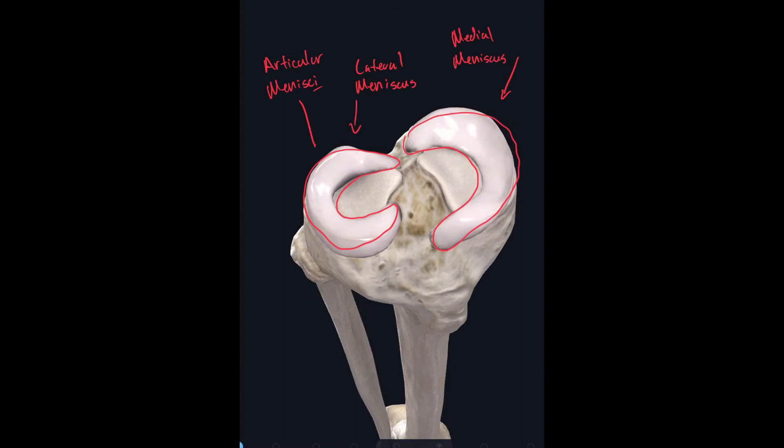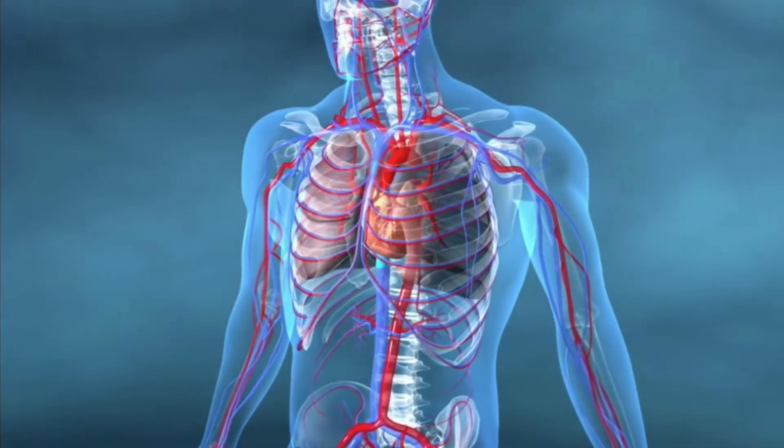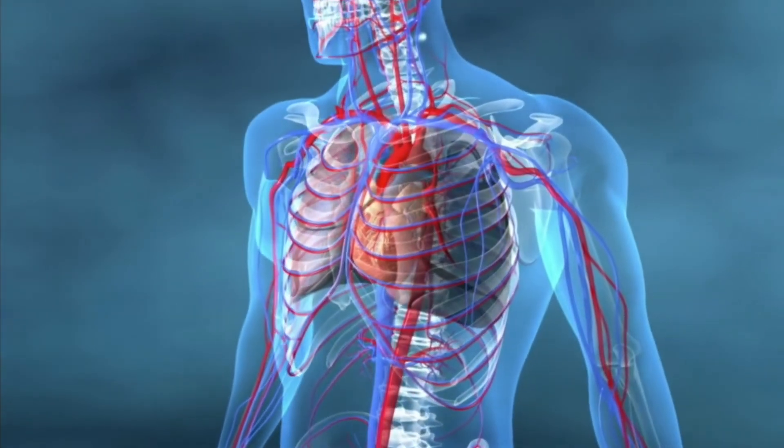That concludes this video. We went over the basic parts of a synovial joint, as well as different components found in synovial joints such as articular discs and menisci. We also covered the three classes of ligaments. I hope this video was helpful, and I hope to see you guys again soon. Take care.